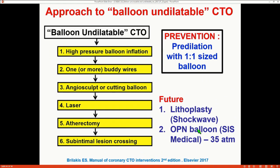For balloon undilatable lesions — where the balloon goes through but the lesion doesn't crack — the key is to recognize this early and act before placing a stent, because it's much easier to modify a lesion without a stent in place. Once a stent is in, you're limited to high-pressure balloon or laser with contrast. Coming soon: lithoplasty — the shockwave technique that uses lithotripsy concepts to crack plaque — and the OPN high-pressure balloon that can go up to 35 atmospheres safely and can crack many of those plaques. The sequence is high-pressure balloon first, then one or more scoring wires to modify plaque, then laser, then atherectomy.